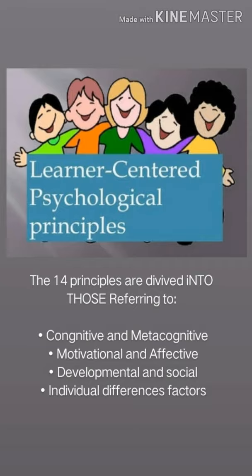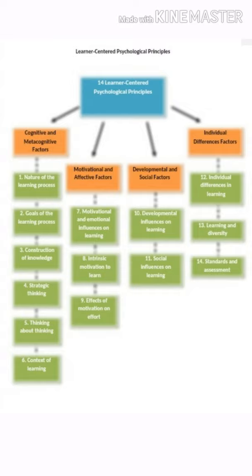For cognitive and metacognitive factors: number one is the nature of the learning process, number two is the goals of the learning process, number three is construction of knowledge, number four is strategic thinking, number five is thinking about thinking, and number six is context of learning. For motivational and affective factors, number seven is motivational and emotional influences on learning.